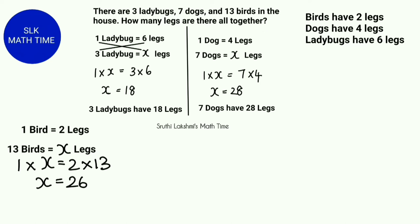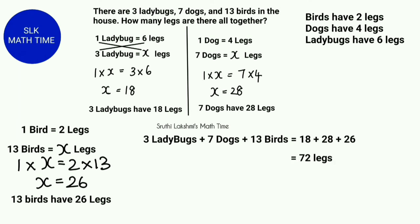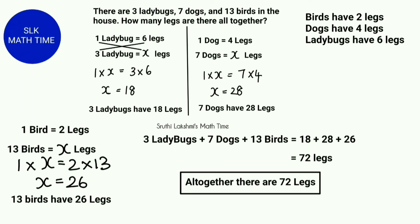Now we have to see how many legs there are altogether. We have to add the number of legs for 3 ladybugs, 7 dogs, and 13 birds. Remember, 3 ladybugs have 18 legs, 7 dogs have 28 legs, and 13 birds have 26 legs. So we add 18 plus 28 plus 26, which gives us 72 legs altogether.